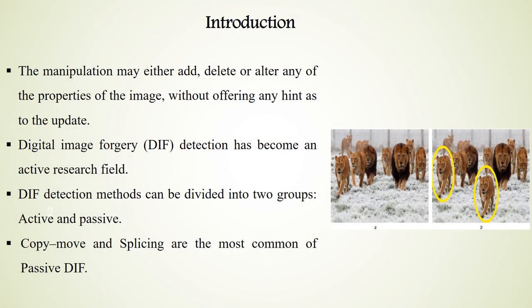Today I'm talking about what is splicing image forgery. Firstly, you can add, delete, or alter any of the properties of the image without offering any hint of the update. Digital image forgery detection has become an effective and active research field. Forgeries can be classified into two groups: active and passive. Copy-move and splicing are the most common of the passive types.